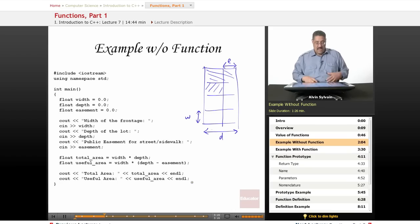So we print that out—total area and useful area. You do this calculation for one lot, another lot, another lot. We've already got a place where we might want to put this into a function.